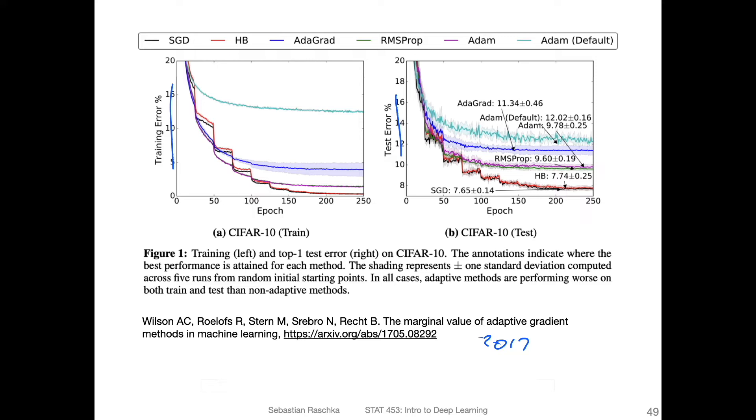What is interesting is that they find they have Adam, the more optimized one with hyperparameter tuning and the default one. Most people use the default one, but in this case, the default one performs really bad. The tuned one performs better here. In contrast to the previous slide, they find that on the training set, SGD performs better than Adam.